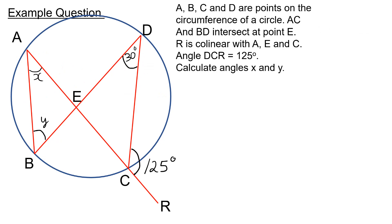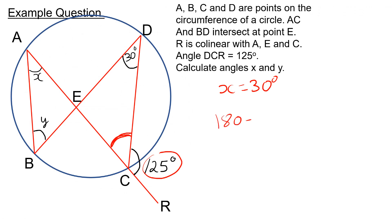Here's an example question. A, B, C, and D are points on the circumference of a circle. AC and BD intersect at point E. R is collinear with A, E, and C. Angle DCR is 125 degrees, and we want to calculate values X and Y. We can see the bow tie shape formed by A, B, C, D, and E, so X is 30 degrees straight away. To find Y, we note that angle ACD equals 180 take away 125, which gives 55 degrees. So Y equals 55 degrees.